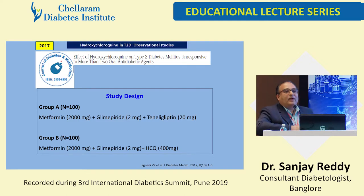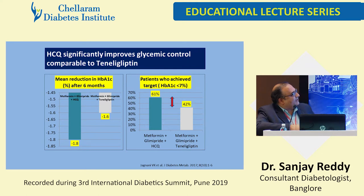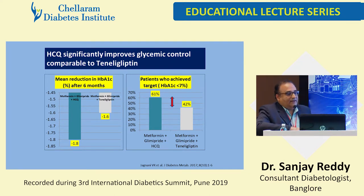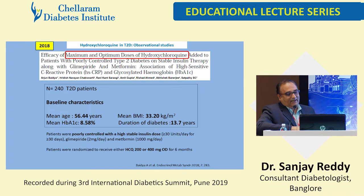Another study compared HCQ with teneligliptin instead of pioglitazone. The results were similar or equivocal to teneligliptin — equally effective glycemic control. The A1C reduction was similar: minus 1.6 to minus 1.8%. Patients achieving target A1C ranged from 42 to 61%. HCQ can be used in patients on insulin, who failed two drugs, and it was similar to pioglitazone and teneligliptin in terms of glycemic efficacy.